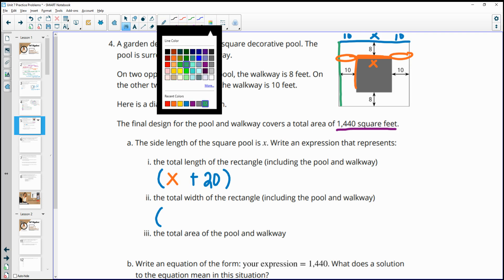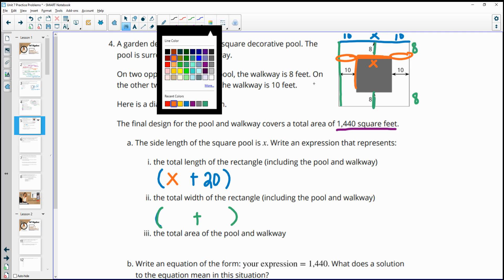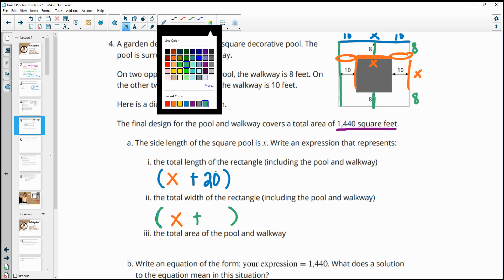Because that's the extra width here is 10, and then this is X and then this is 10. So it's going to be X plus 20 for that length. Then if I go to do the width, kind of like the height in my picture here, this height is going to have an eight and an eight for these. And it's going to have the pool measurement in there of X. So it's going to be X plus 16 for that.